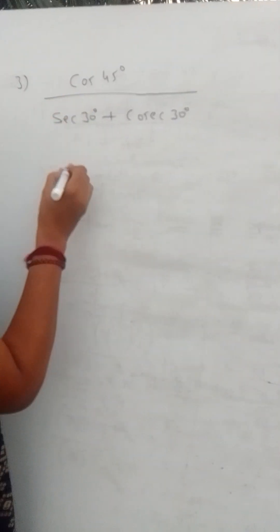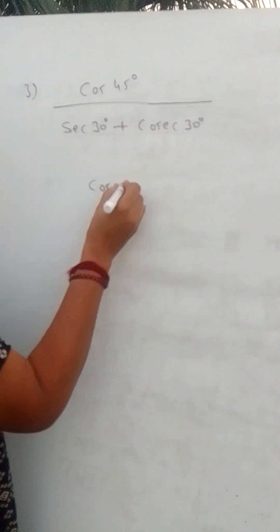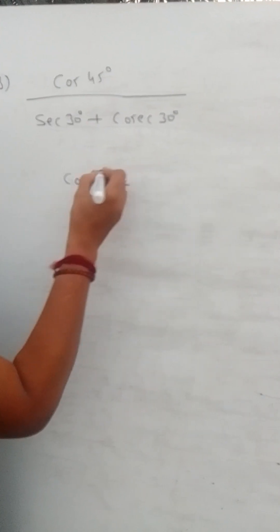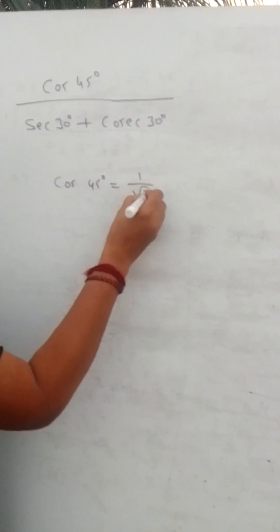Know the values of cos 45°. cos 45° is equal to 1 by root 2.